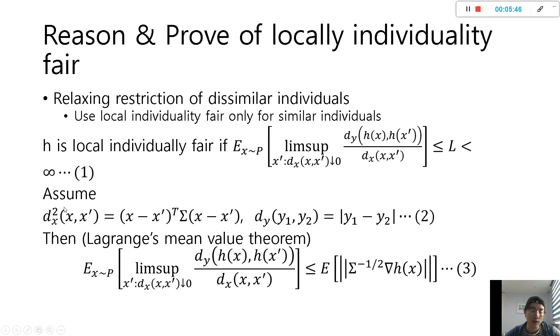Then when we assume fair matrix like this equation 2, we can derive equation 3 by Lagrange multiplier theorem. And it proves that locally individual fairness holds when equation 3 is not infinity.